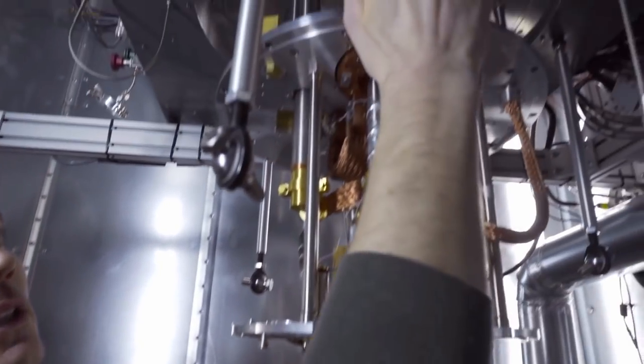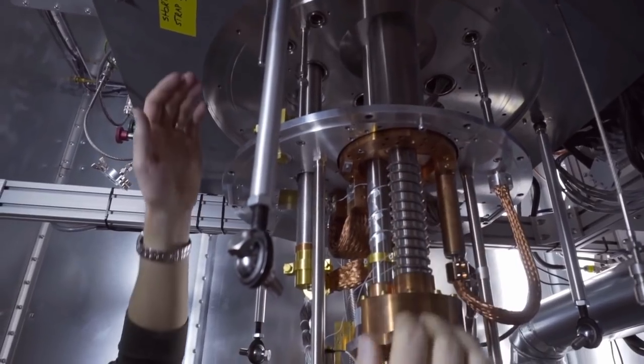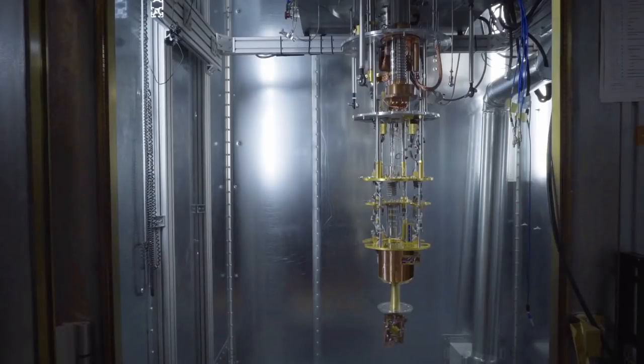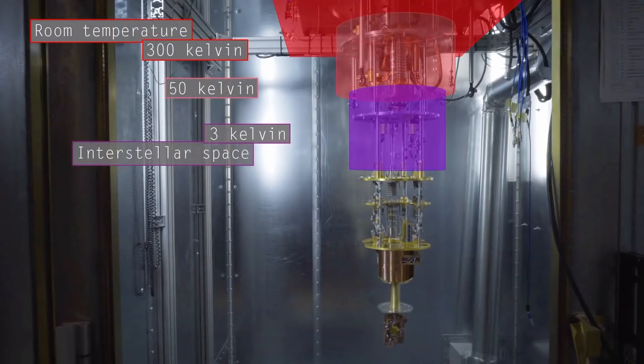There's two levels of cooling in this system. The top one is a pulse tube refrigerator, which takes us from 300 Kelvin to 50 Kelvin, and then down to 3 Kelvin. This is roughly the temperature of interstellar space.